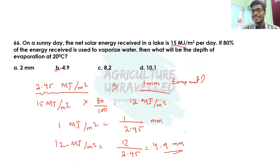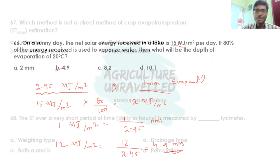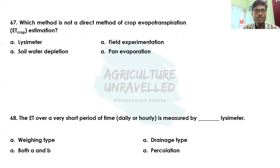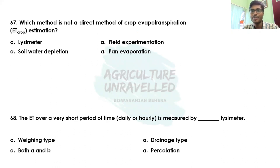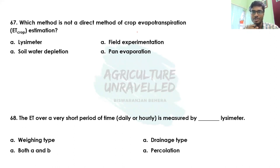Coming to the next question: which method is NOT a direct method of crop evapotranspiration estimation? The options are lysimeter, soil water depletion, field experimentation, and pan evaporation. From now we'll discuss different methods for estimation of evapotranspiration.